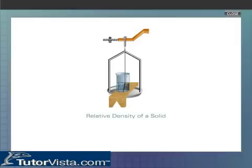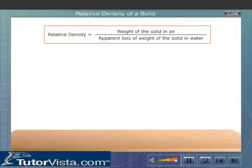Relative density of a solid is defined as the ratio of the weight of the solid in air to the apparent loss of weight of the solid in water. Relative density has no unit as it is the ratio of two similar physical quantities. The relative density of a solid can be determined using the Archimedes principle.